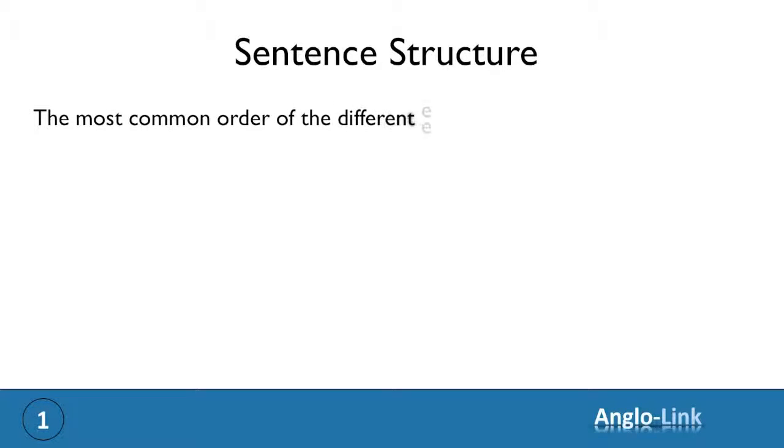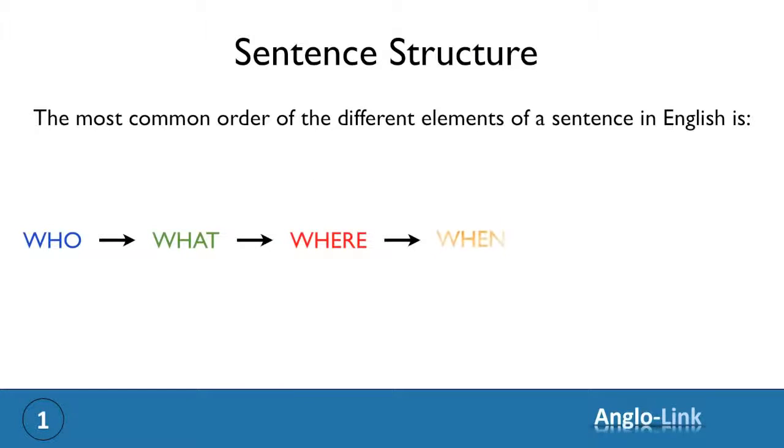In this part we're going to focus on sentence structure. The most common order of the different elements of a sentence in English is who, what, where, when, how and why.